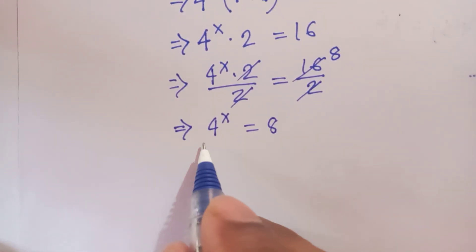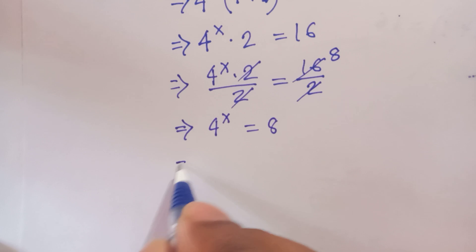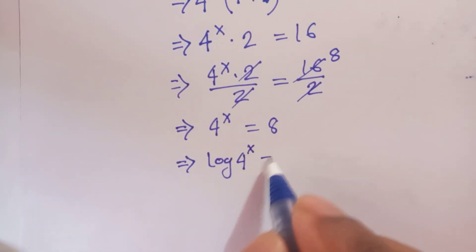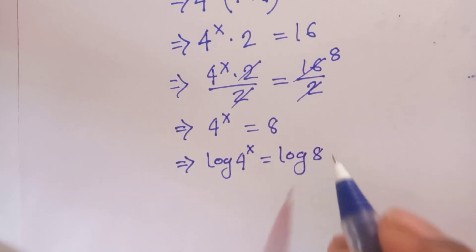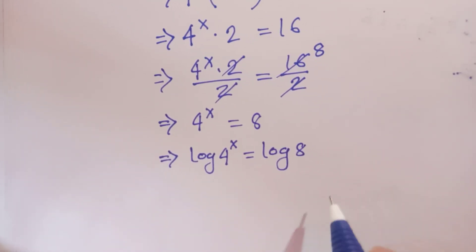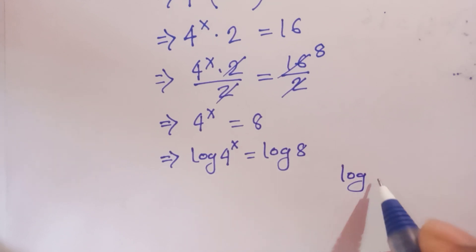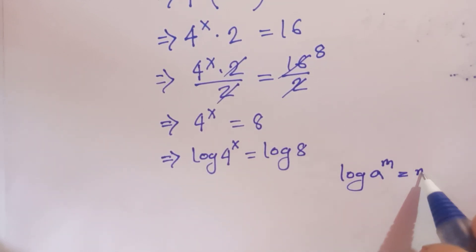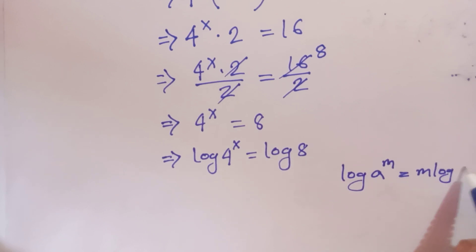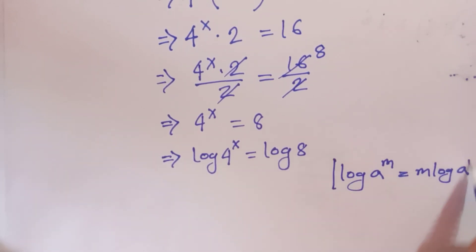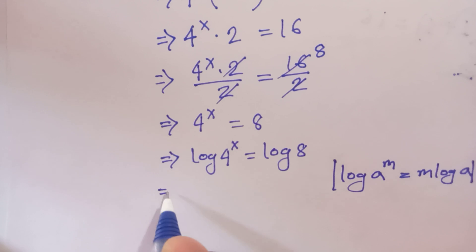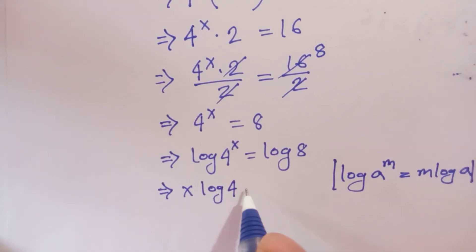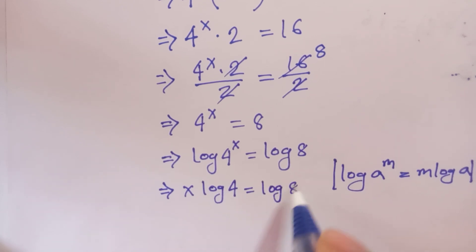Now we apply log to both sides. So log of 4 to the 4x is equal to log of 8. We know that log of a to the m is equal to m times log of a. Applying this rule, the left side becomes 4x times log of 4 is equal to log of 8.